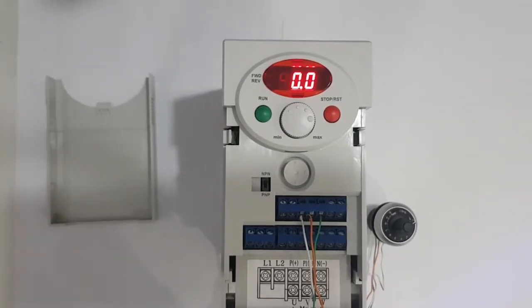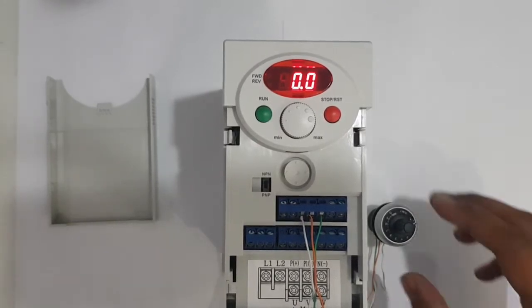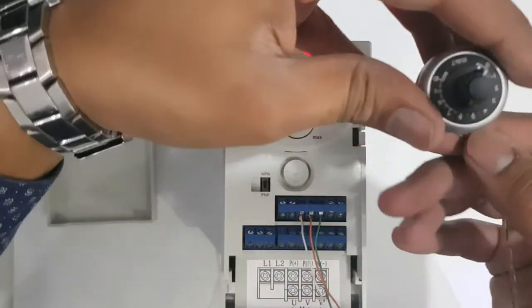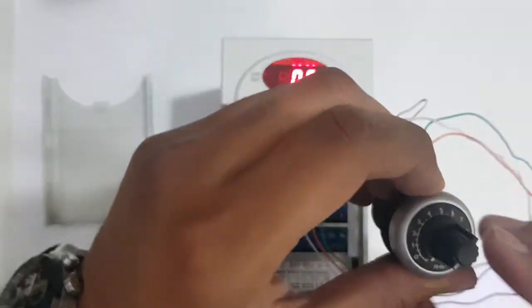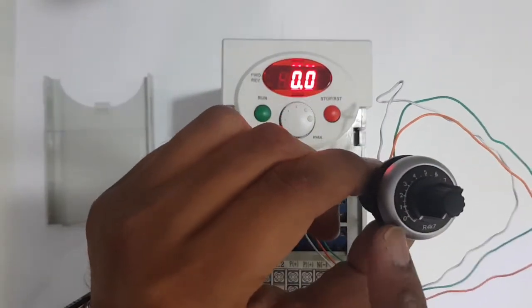In this video I will show you how to program IC5 using a potentiometer and how to connect it. First, I will show you how to connect. Here if we give it like this, 0 here and 10 here.